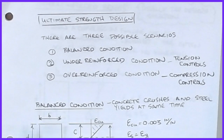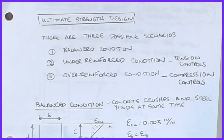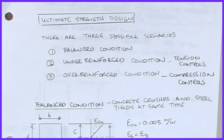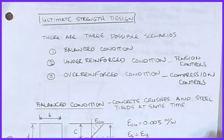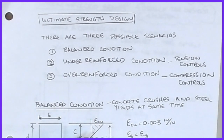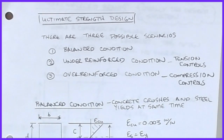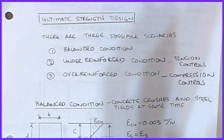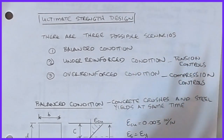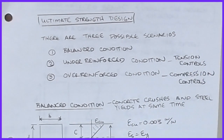In today's video we're going to change our approach a little bit. Up to this point we've always done analysis problems where we knew the section dimensions and the reinforcing, and we were looking at how much moment all of that could carry. But in design that's not generally how it works — a lot of times I know the loads but not how much reinforcing steel I need. So we need to come up with a strategy for design and look at ACI requirements for minimum steel areas.